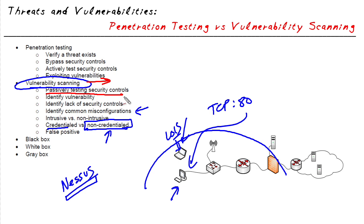Just because vulnerability scanning is passive doesn't mean we're allowed to scan any network we happen to be on. We'd also want to make sure we have the proper authorization on any system before doing vulnerability scanning. In a corporate environment, an unauthorized device doing a vulnerability scan would be considered aggressive and very likely would be against corporate policy.